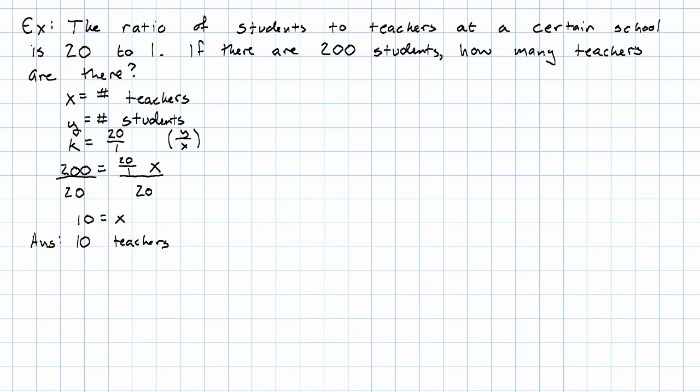So for example, if we say the ratio of geese to ducks is 7 to 3, how many geese are there if there are 30 ducks?